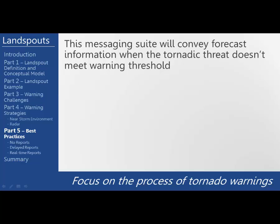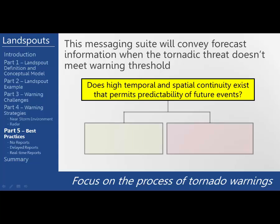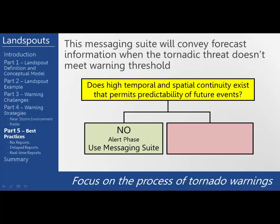The suite of messaging options will convey when the tornadic threat doesn't meet the warning threshold. Here's a simple flowchart to help guide the decision process: Does high temporal and spatial continuity exist that permits predictability of future events? If the answer is no, then we are in the alert phase and should use a suite of messaging options. However, if the answer is yes and we do have enough continuity, then we are in the tornado warning phase and should issue a tornado warning.